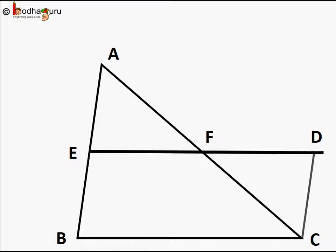Now in triangle AEF and triangle CDF: AF is equal to FC, as F is the midpoint of AC — this is given. AE and CD are parallel, and AC is a transversal.